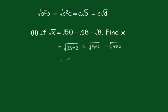Now that is 5 root 2 plus 3 root 2 minus 2 root 2. Now this gives me 8 root 2 minus 2 root 2, which gives me 6 root 2.